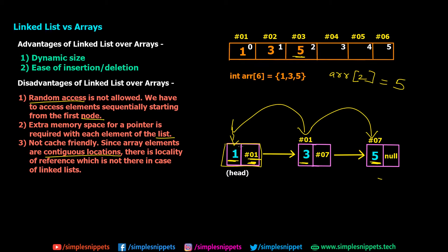Those are the three disadvantages, but you have to understand that linked lists have two major advantages, so we need to know when exactly to use a linked list versus an array. Where dynamic size is required or where insertion and deletion happen frequently, a linked list would be more beneficial. Arrays are useful when there is a lot of random access required or when you want to save memory space. The key is to understand which data structure to use because each has its own pros and cons and is suitable only for specific tasks.